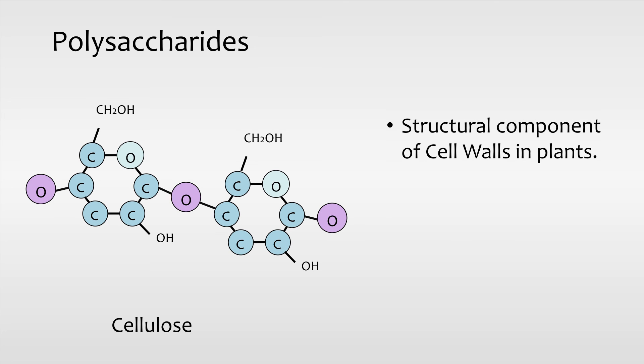Cellulose is an important structural component of cell walls in plants. When we consume and ingest plants, our body does not have the necessary digestive enzymes to properly break down cellulose. However, cellulose is important in maintaining normal digestive functions by assisting the digestive system as fiber. It forms bulk in feces for excretion of waste products in our body.